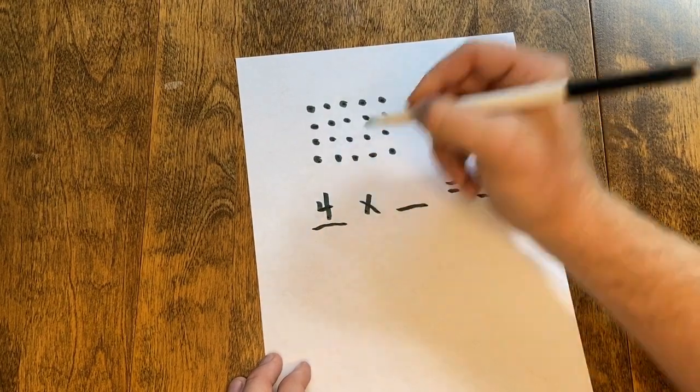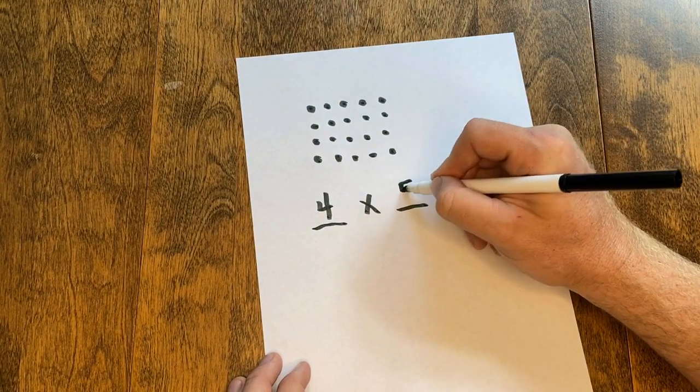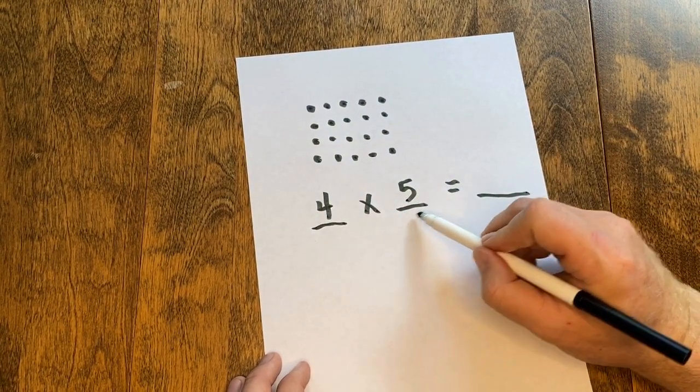And in each row there are one, two, three, four, five. There's my second factor. Four times five equals twenty.